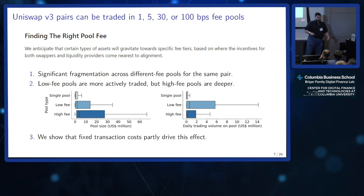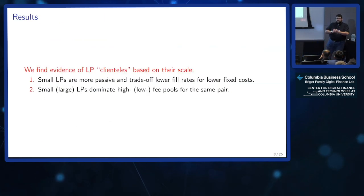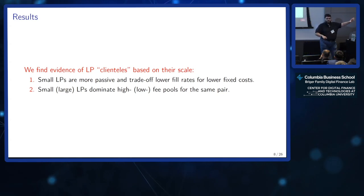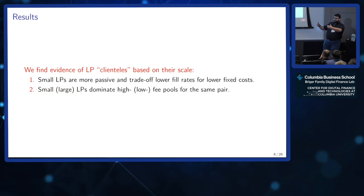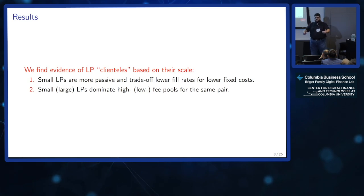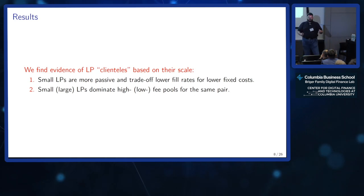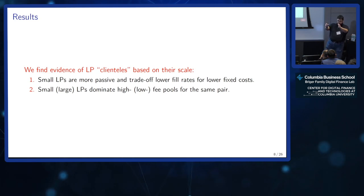What we show is that the answer is fixed costs. Fixed costs create clientele among liquidity providers. The people providing liquidity on the 5 basis point pool and those on the 30 basis point pool are not the same kind of LPs. Small LPs — think of them as retail — are more passive. They go to the high-fee 30 basis point pool, accept being filled much less often, but get the higher fee when they are and have to rebalance less often. Big players go to the low-fee pool and move their liquidity around a lot.